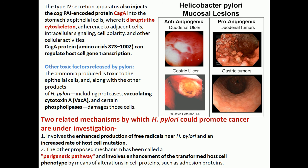The second possible cancer-promoting pathway is called the epigenetic pathway. It involves enhancement of the transformed host cell phenotype by means of alteration in cell proteins, such as adhesion proteins. This change in protein content is called the epigenetic pathway — it depends not directly on the gene but on proteins.